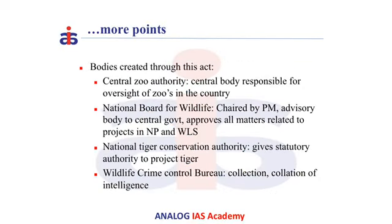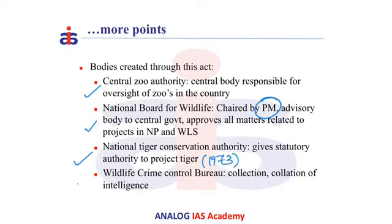Several bodies were created under the Wildlife Protection Act. The first is the Central Zoo Authority, the central body responsible for oversight of zoos in the country. The second is the National Board for Wildlife, chaired by the Prime Minister, which serves as an advisory body to the central government — its approval is necessary for any project falling within national parks or wildlife sanctuaries. The act also creates the National Tiger Conservation Authority, which gives statutory status to Project Tiger launched in 1973, and the Wildlife Crime Control Bureau, an intelligence agency to combat wildlife crime in the country.